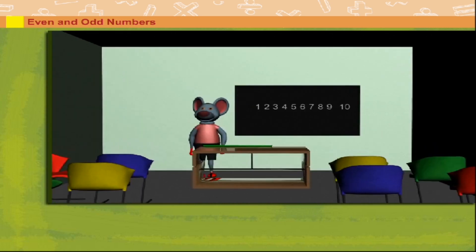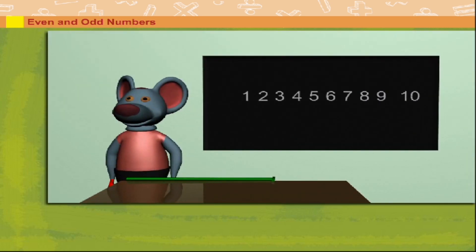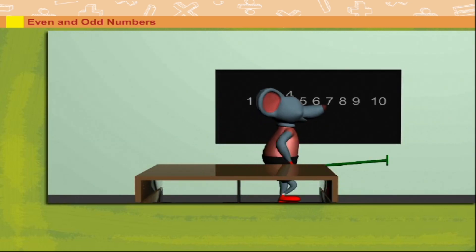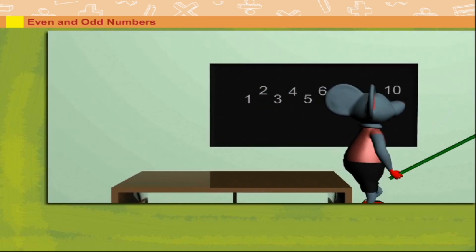Even and odd numbers. Robbie Mouse has digits 1 to 10 on the board. He picks up his cue and lifts the digits 2, 4, 6, 8 and 10.